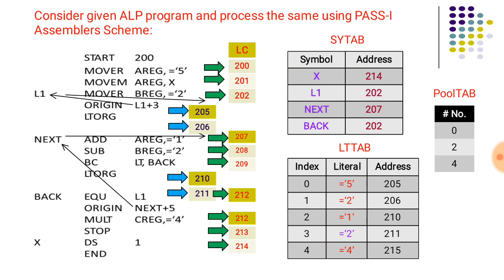X is already entered in the symbol table. The address for X is 214, since X is defined at line 4 and reserves one word of data storage. The label L1 has location counter content 202. The label NEXT has location counter content 207. BACK is assigned the address of L1 by the assembler directive EQU, so since L1 has address 202, BACK also has address 202 and not 212.